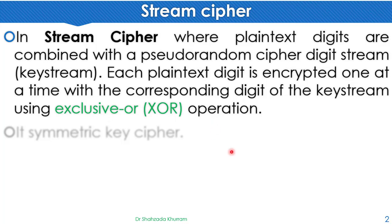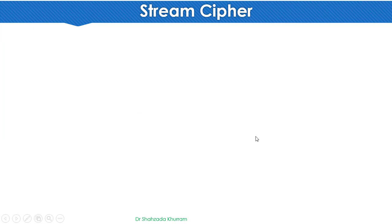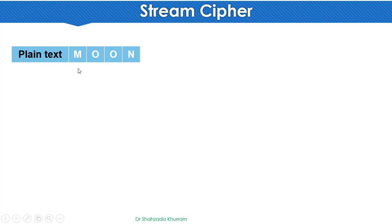This is what happens in a stream cipher: plain text digits are taken, a pseudo-random key is generated, and each plain text digit is encrypted one by one using the exclusive OR operation. It is a symmetric key cipher — stream cipher is basically a symmetric algorithm. Now let's see how stream cipher works. First, plain text.